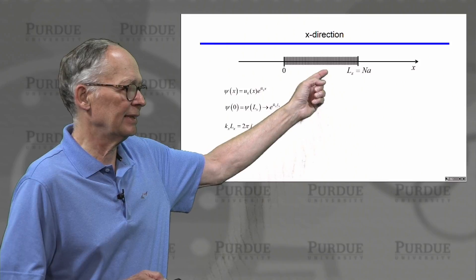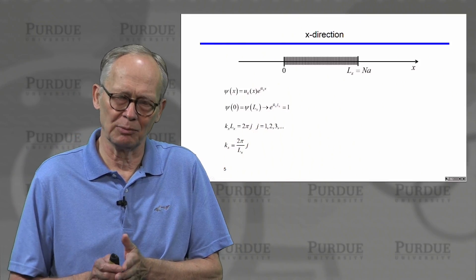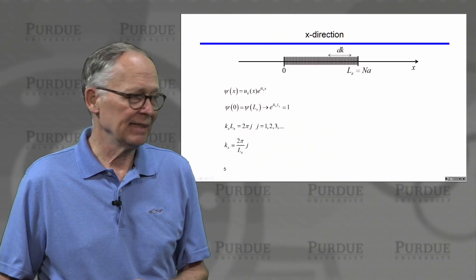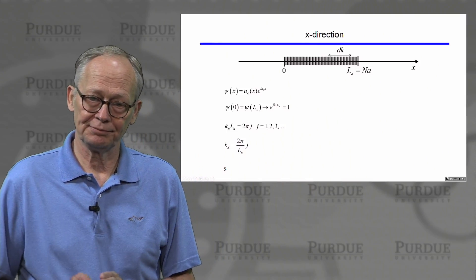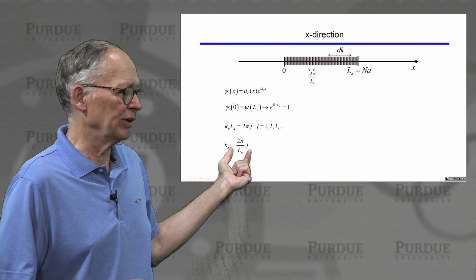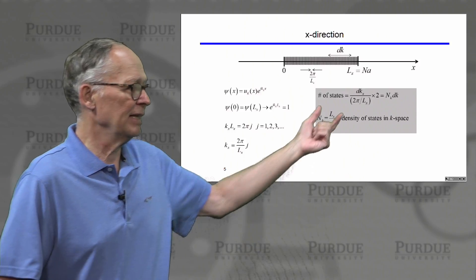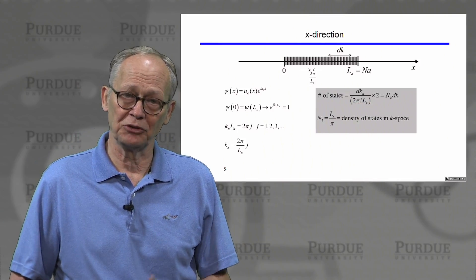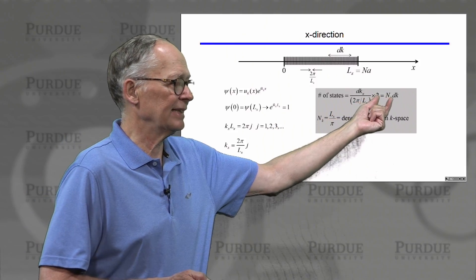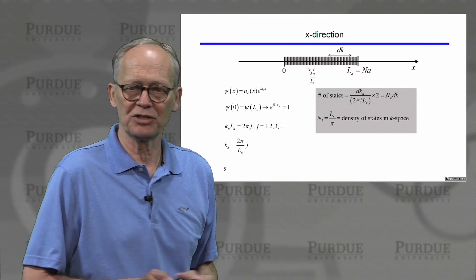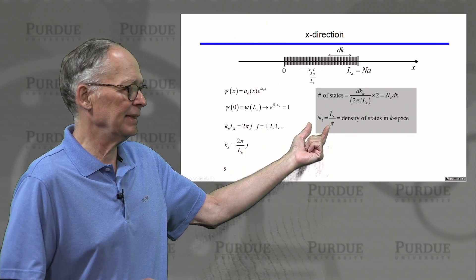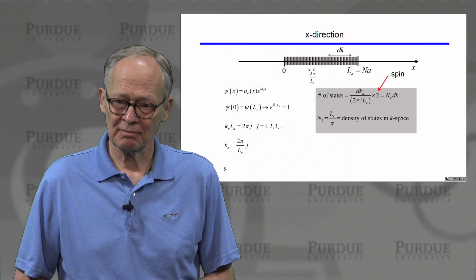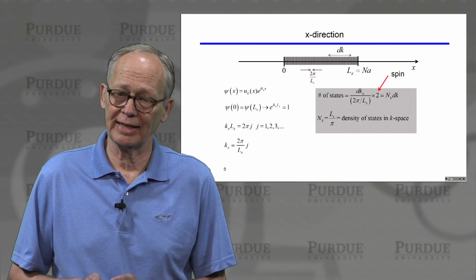We now ask: in some range dk, how many states are there? Each state is spaced by 2π over Lx. So the number of states in that region is dk divided by the spacing between states. We multiply by 2 because each state can hold an electron with spin up or spin down. This quantity is the density of states in k-space times the width dk. So the density of states in k-space is L over π in one dimension. We must always account for the factor of 2 for spin.